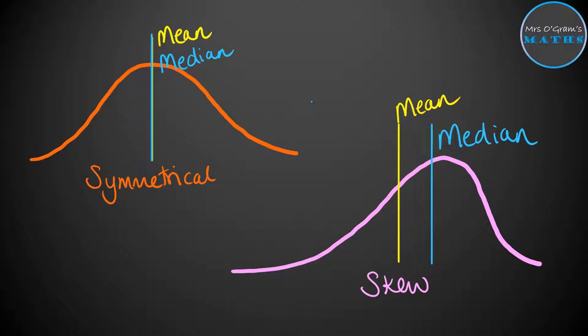You must always justify why you've picked the mean or the median, and it should be backed up by looking at the shape of your distribution and which one will be the better choice. Overall, it's best to go with the median in most situations because in either case the median is going to work. But with skewed data, the mean is not a good measurement to use as a measure of centre.